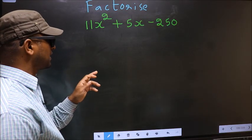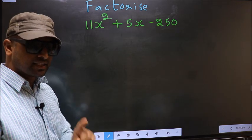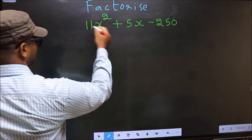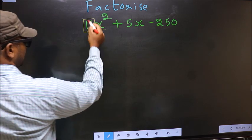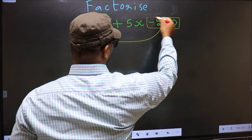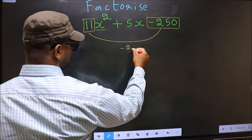Factorize 11x² + 5x - 250. To factorize, step 1: coefficient of x² (that is 11 here) should be multiplied to the constant -250. So 11 × -250 we get -2750.